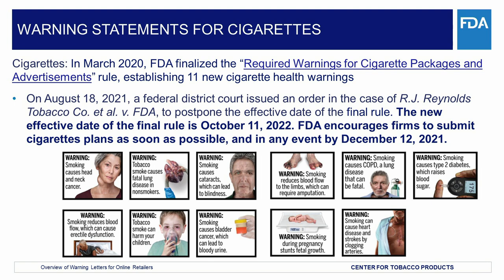These new required warnings, as shown on this slide, depict some of the lesser-known but serious health risks of smoking. On August 18, 2021, the U.S. District Court for the Eastern District of Texas issued an order in the case of R.J. Reynolds Tobacco Company v. U.S. Food and Drug Administration, No. 6:20-CV-176, to postpone the effective date of the Required Warnings for Cigarette Packages and Advertisements Final Rule. The new effective date of the final rule is October 11, 2022. Pursuant to the court order, an obligation to comply with a deadline tied to the effective date is similarly postponed. FDA strongly encourages entities to submit cigarette plans as required by 21 CFR 1141.10(g) as soon as possible and in any event by December 12, 2021.